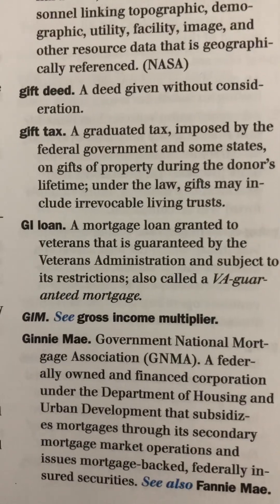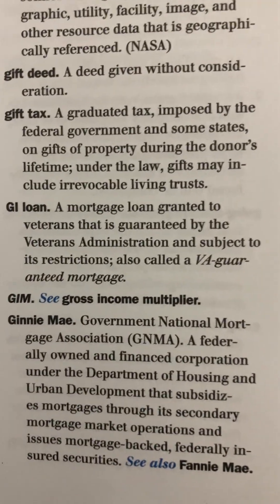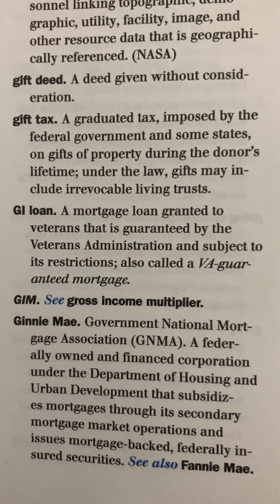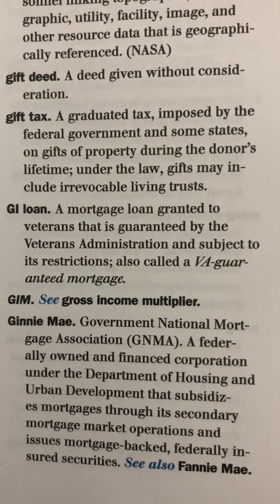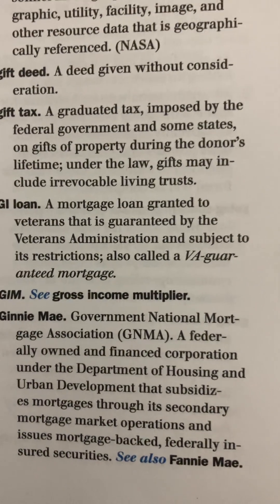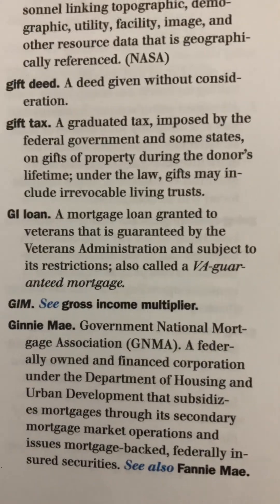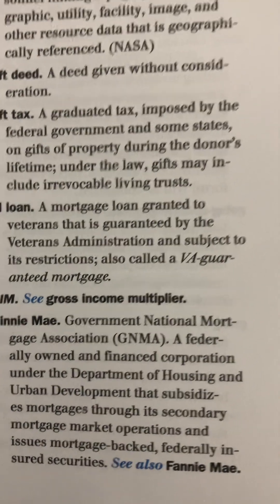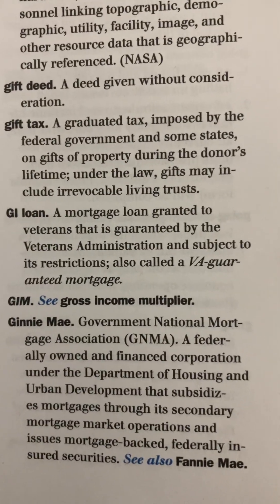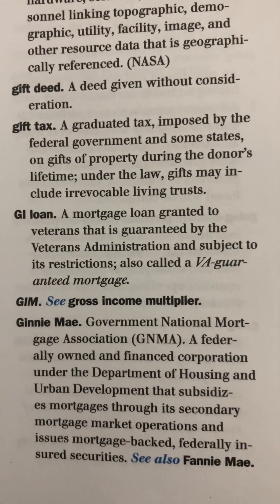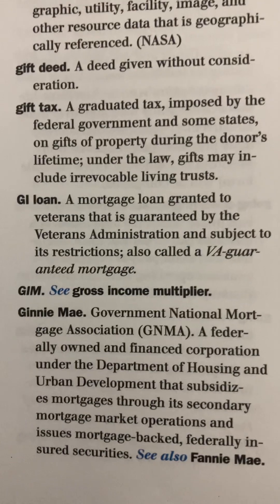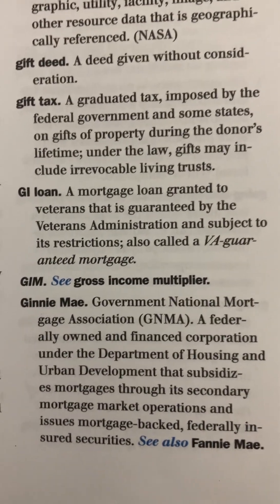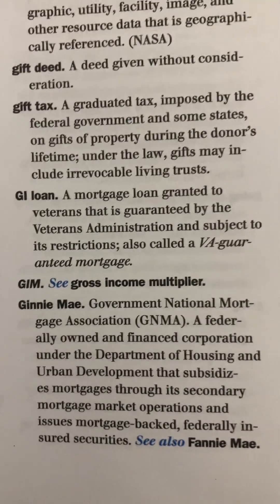GI Loan: a mortgage loan granted to veterans that is guaranteed by the Veterans Administration and subject to its restrictions. Also called a VA Guaranteed Mortgage. GIM: Gross Income Multiplier.